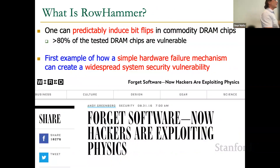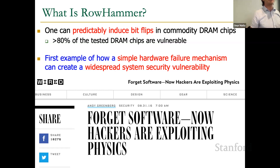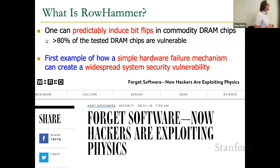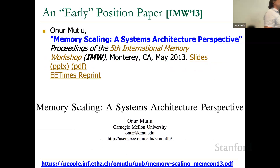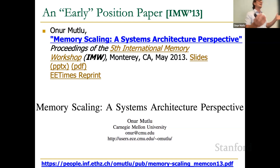So what is RowHammer? RowHammer is the fact that you can predictably induce bit flips in commodity chips. The first time we tested this problem, more than 80% of the tested chips were vulnerable; today it's 100%. This is, as far as we know, the first example of how a simple hardware failure mechanism can create a widespread system security vulnerability. People are writing articles like 'Forget software — now hackers are exploiting physics.'